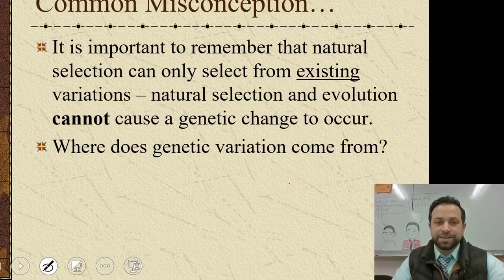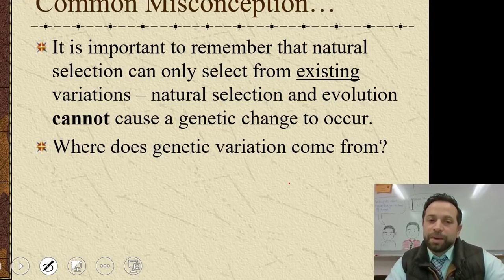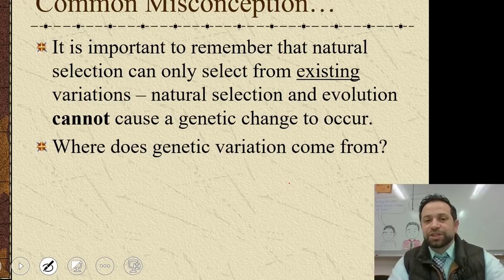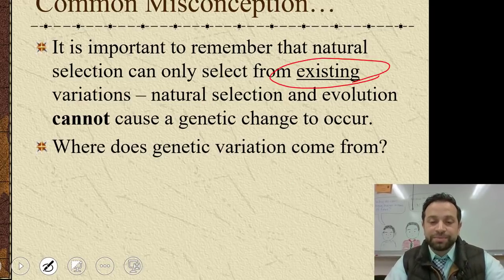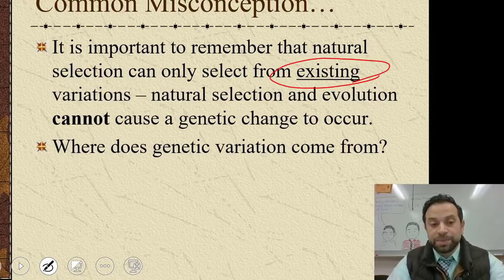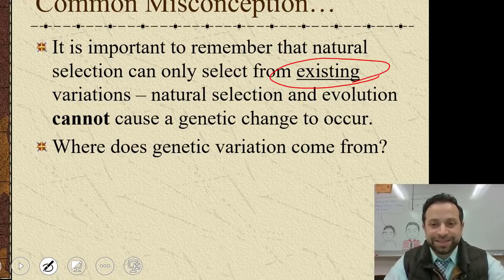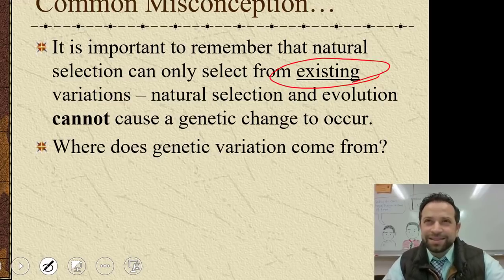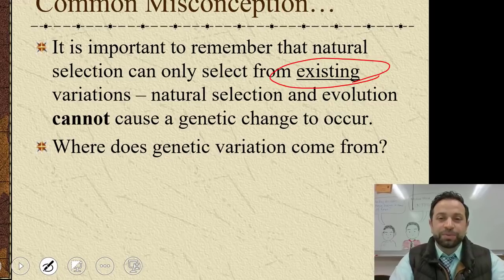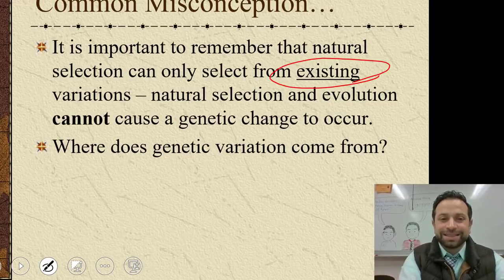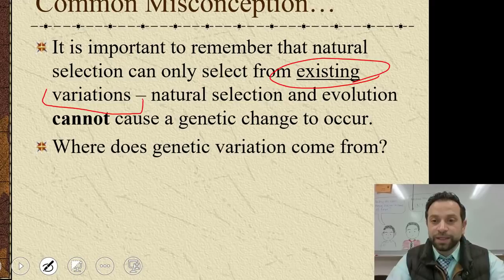Here's the common misconception: natural selection comes from existing variations — this is really important. Sometimes we think new traits just pop up, and while mutations make that possible, we're really talking about existing variations: whatever genes and traits they already have in their population.